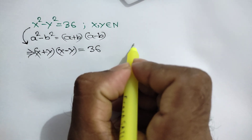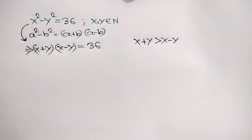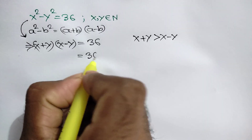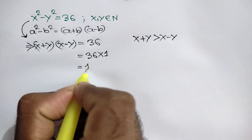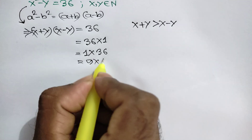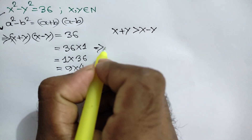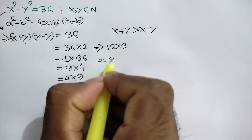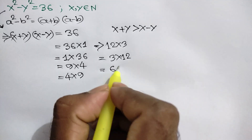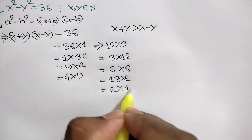Here, x plus y is always greater than x minus y. Now, 36 can be written as factor pairs: 36 times 1, 9 times 4, 4 times 9, 12 times 2, 2 times 3, 3 times 12, 6 times 6, 18 times 2, and 2 times 18.